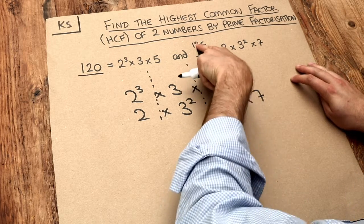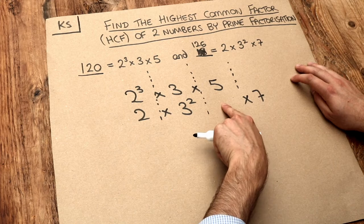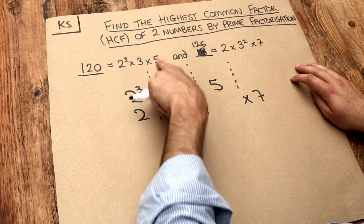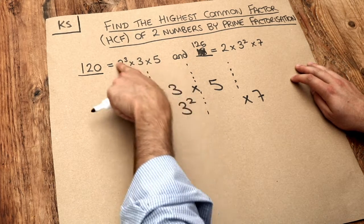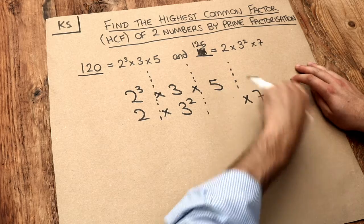That's because the second number, 126, doesn't have a prime factor of five. Similarly, the first number here doesn't have a prime factor of seven, so I've left that space blank in the seven column.